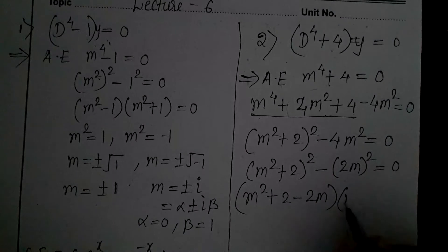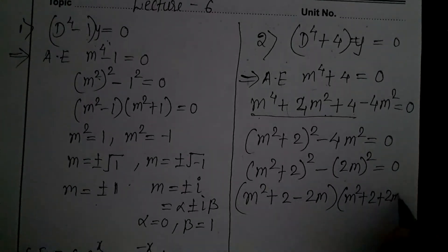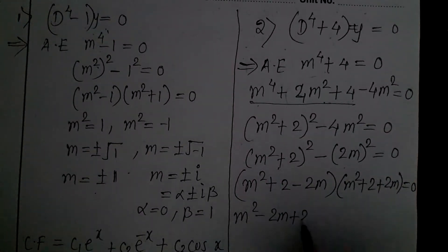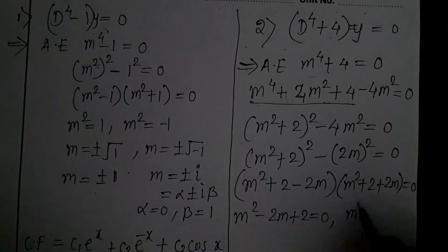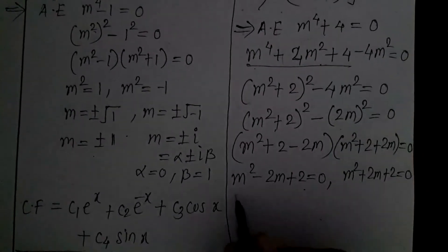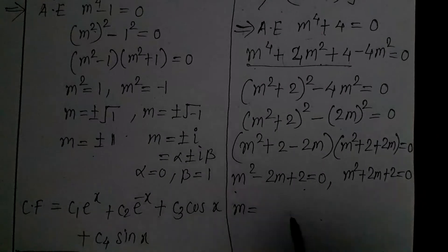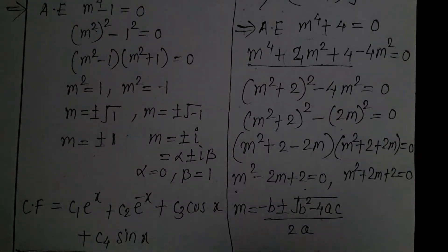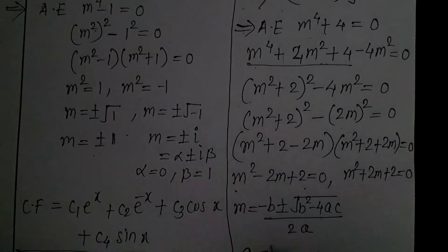Applying the difference of squares factorization gives (m² + 2 - 2m)(m² + 2 + 2m) = 0. So the two quadratic factors are m² - 2m + 2 = 0 and m² + 2m + 2 = 0. To find roots we use the quadratic formula: m = (-b ± √(b² - 4ac)) / 2a. For the first equation, a = 1, b = -2, and c = 2.